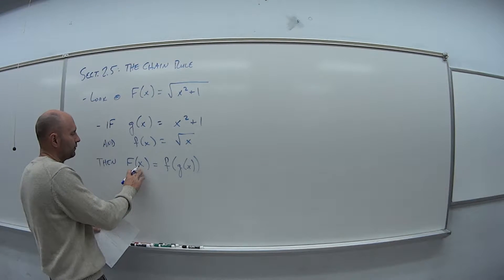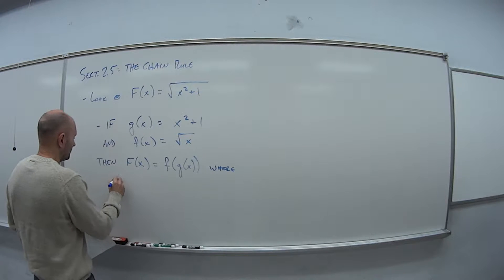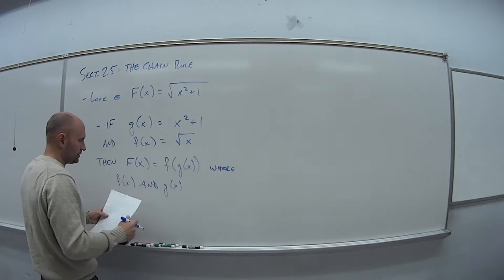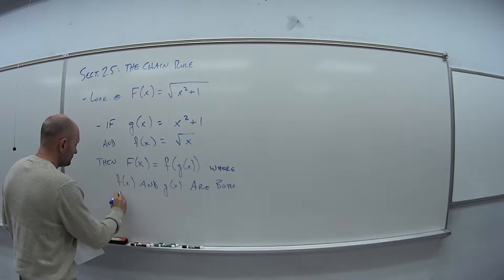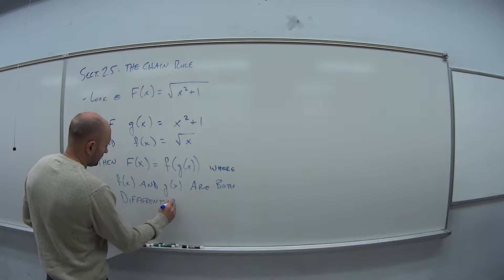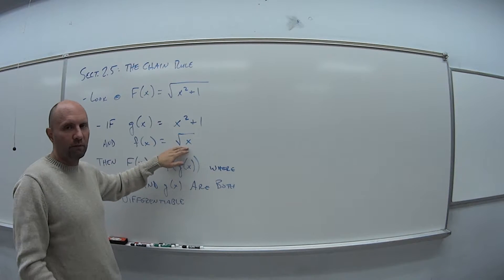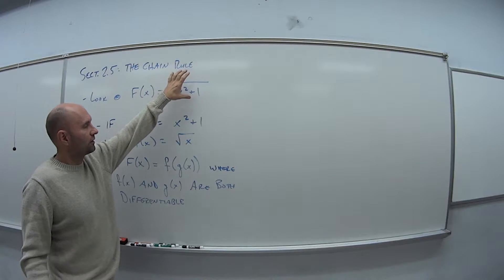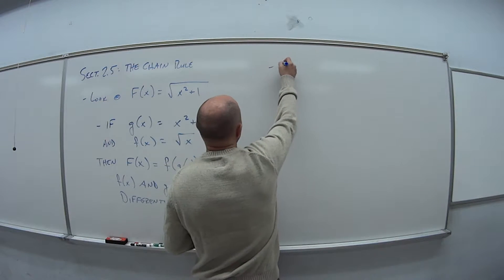And in this case, because we've rewritten this F of x as a composite function where our small f of x and our g of x are both differentiable, we can take the derivative of g of x by itself, we can take the derivative of f of x by itself. And so since we've rewritten this function as a composition of functions that we can take the derivative independently, that leads us to the chain rule.